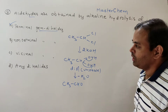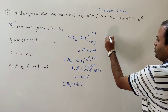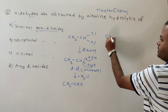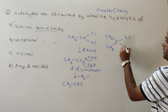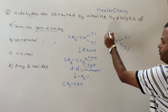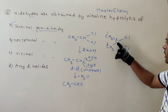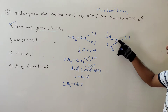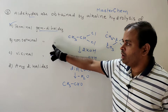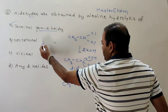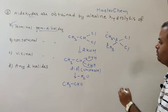What happens if we take a non-terminal gem dihalide? For example, CH₃CCl₂CH₃ — this is a non-terminal gem dihalide. The chain has 3 carbons, and the two halogens are present on the middle carbon, not at a terminal position. It is still a gem dihalide because the two halogens are on the same carbon.